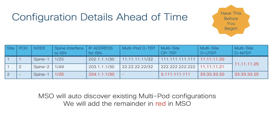A best practice tip: when you're doing any kind of infra configuration involving interfaces, IP addresses, loopbacks, and TEP addresses, it's a good idea to write all of these things down and make decisions about what those addresses and interfaces will be in your environment. When you get to the configuration part it just goes much more quickly and you don't have to make things up on the fly.